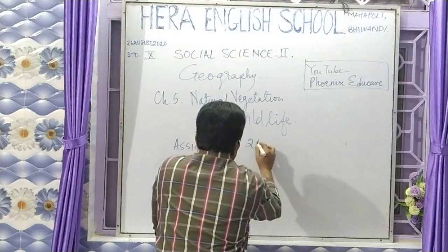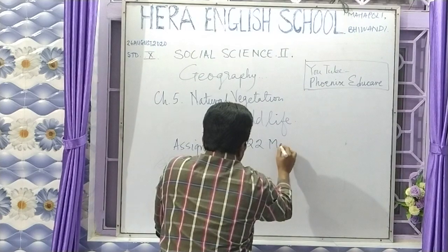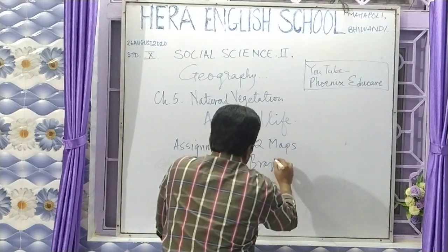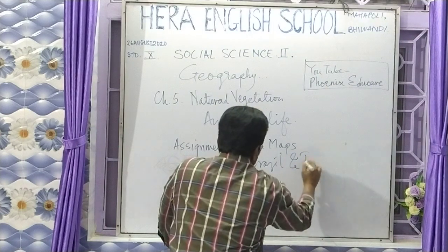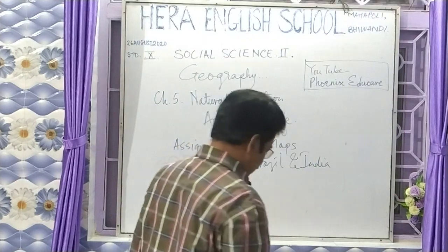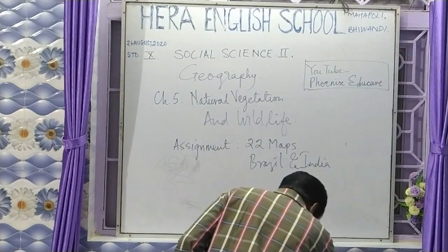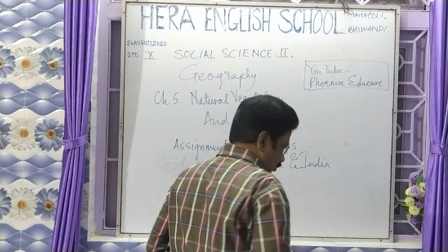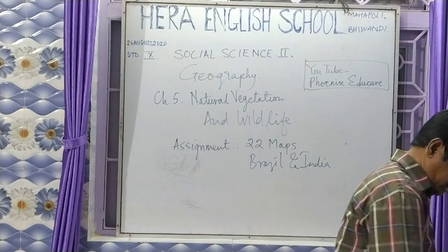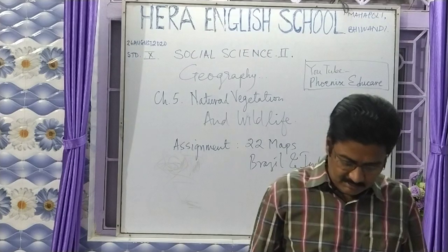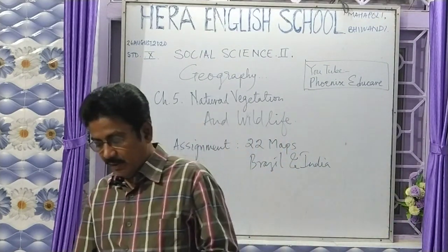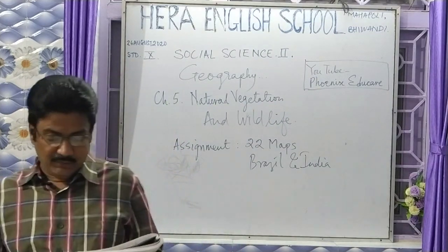The assignment has 22 maps — both Brazil and India — which will consist of 10 marks. You have to remember to complete those maps cleanly, clearly, properly, and perfectly. There should be no eraser marks or any problematic issues. Now we move on to the Wildlife of India.